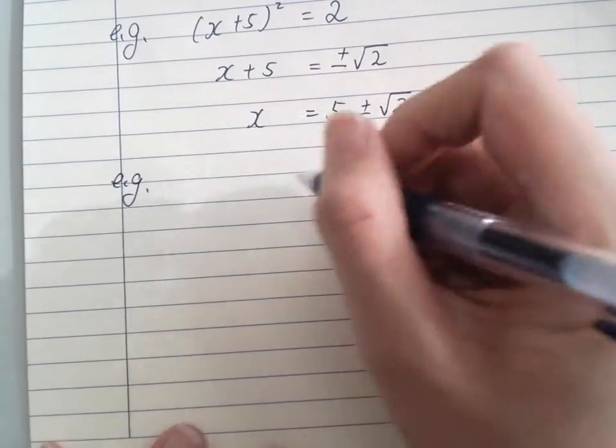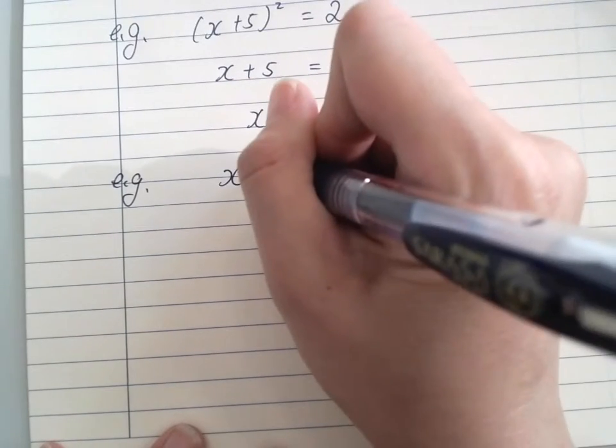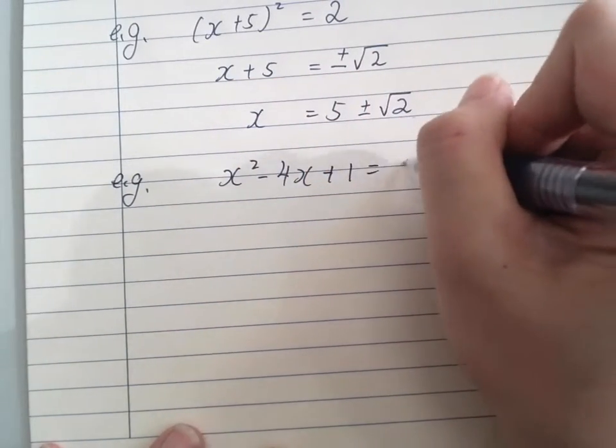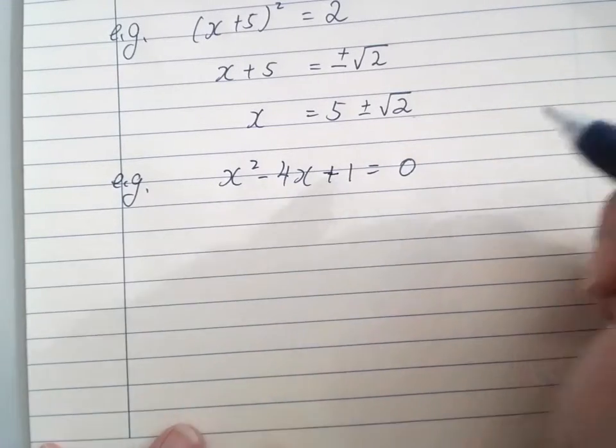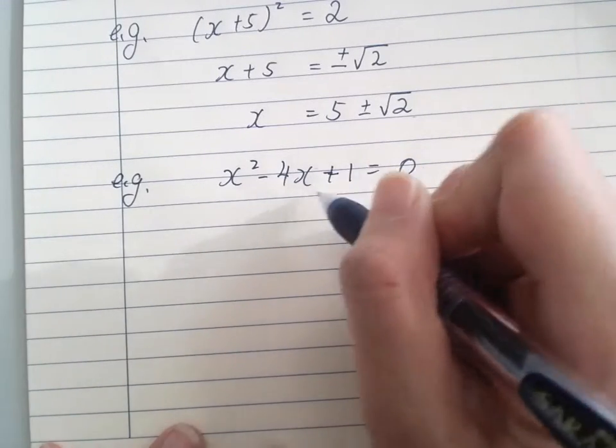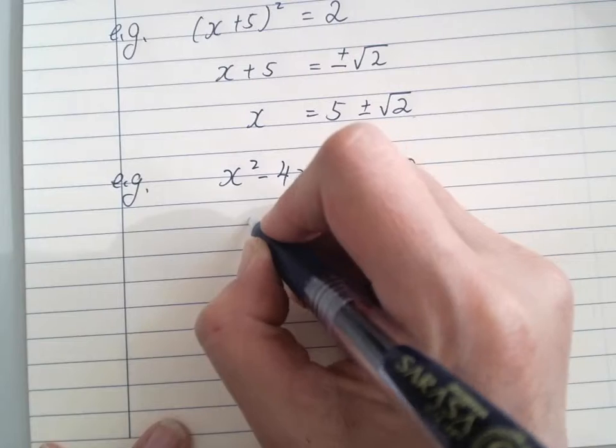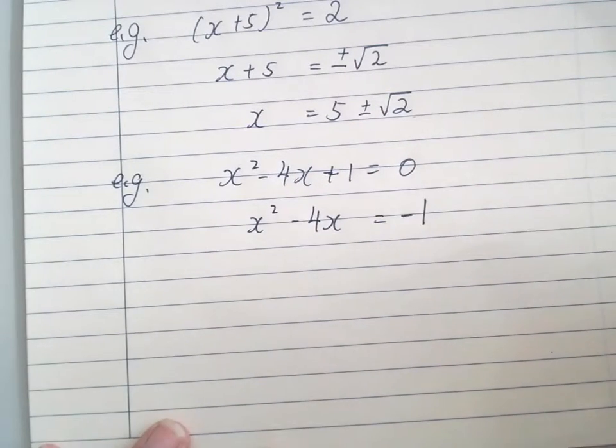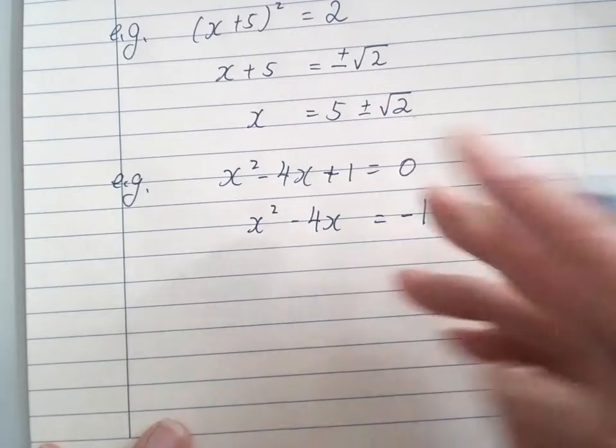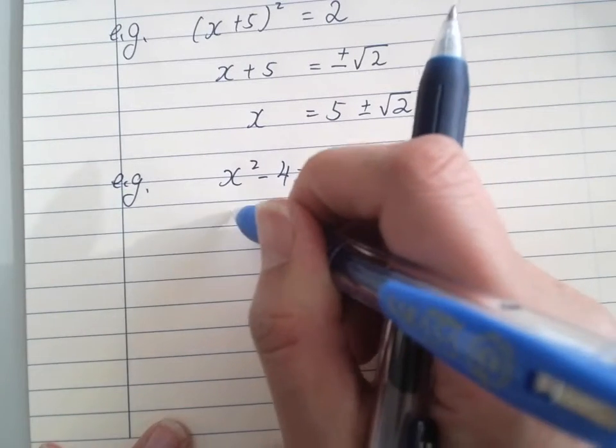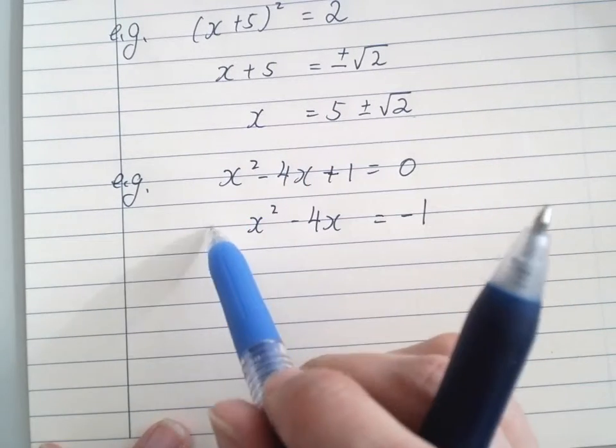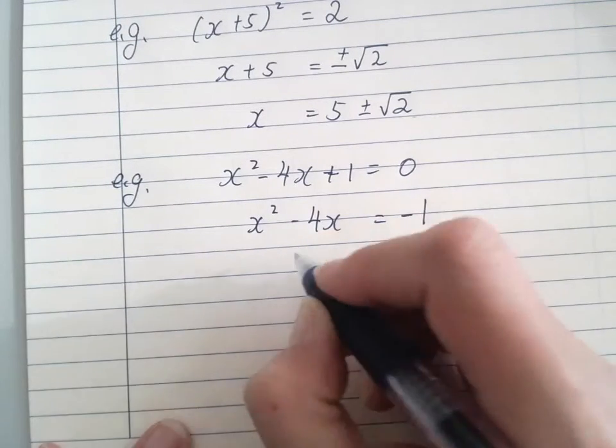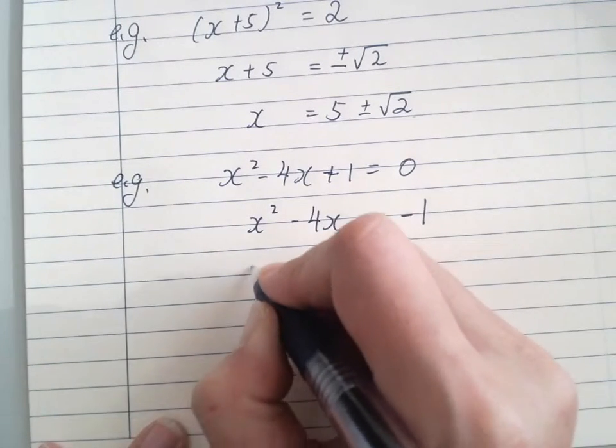When completing the square, I usually throw the constant to the other side. For example, this is the equation: I don't like to deal with constants, so I'll move that to the other side. Also remember, try to have no coefficient for the x². That's very helpful. So we have x²-4x = -1.